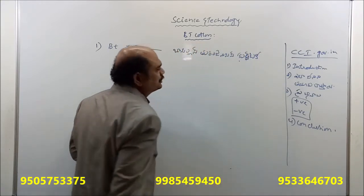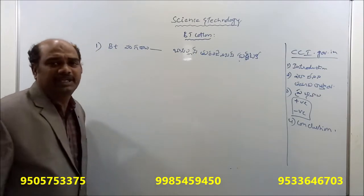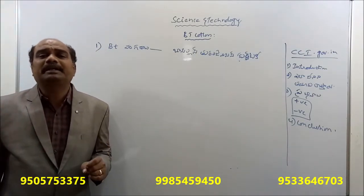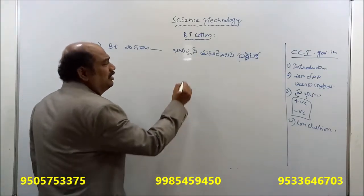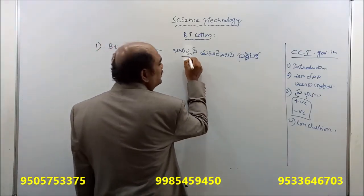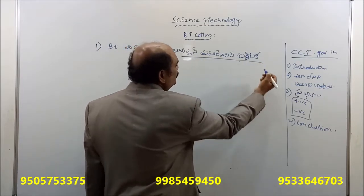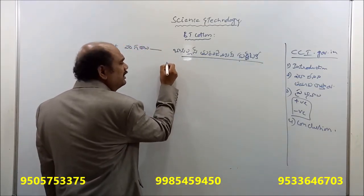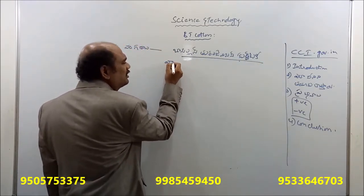Bacillus thuringiensis is a bacteria. Bacillus thuringiensis — these are bacteria. They are the core microorganism from which the Bt gene is derived.